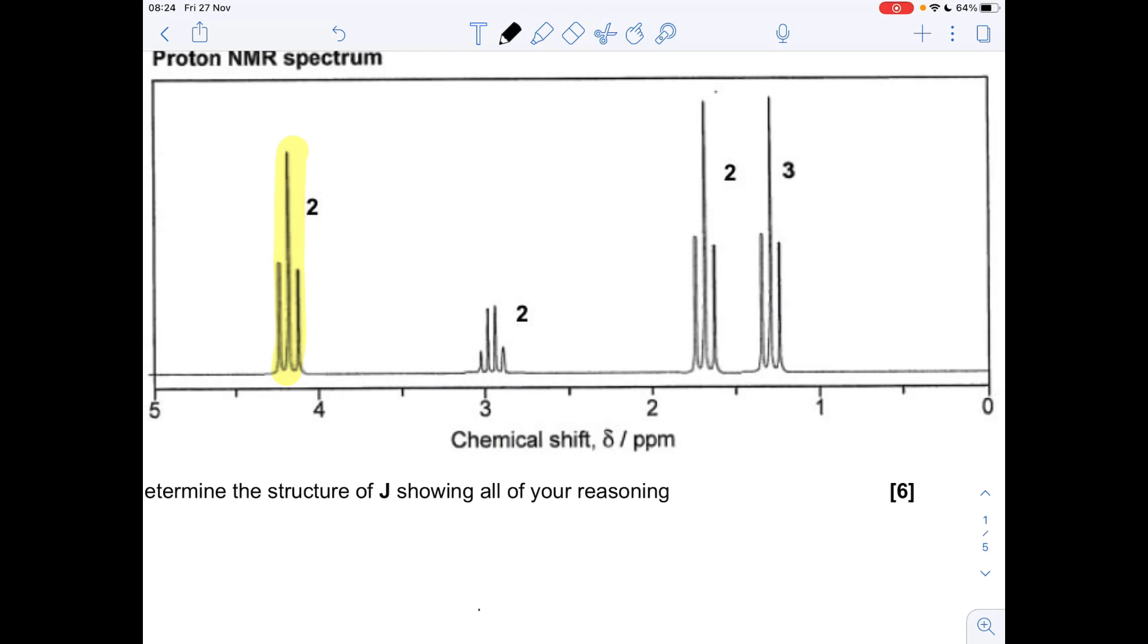We'll start with this signal at 4.2 to 4.3 ppm. I've highlighted it yellow. This environment is HC single bond O, and we've got a triplet. That means there's an adjacent CH2 group to the protons causing this signal. We've got an area of two, meaning there are two protons causing the signal, so we have a CH2. This is the H2C-O environment—these have caused that signal. There's two of them, area two, adjacent to CH2, giving us the triplet. We now know we've got this feature in our molecule.